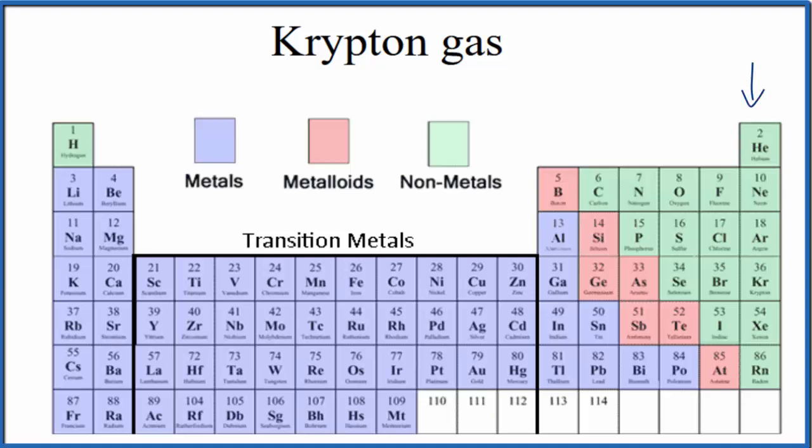So these are all the noble gases, group 18, sometimes called 8A. So here's our krypton right here.